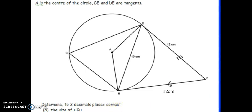Then I also know that the tangent to a radius is 90 degrees and if I should need to use that, I will use it. So they ask me the following question. Determine to two decimal places correct the size of angle BAD. It's this angle.